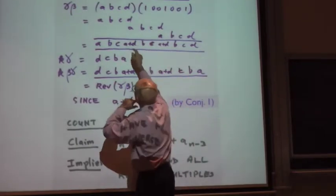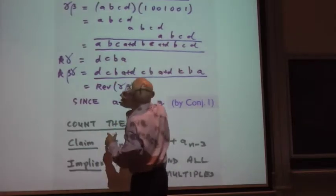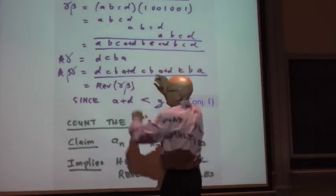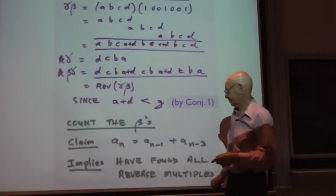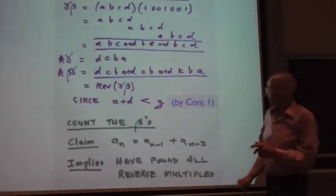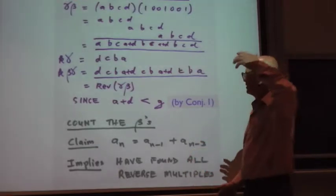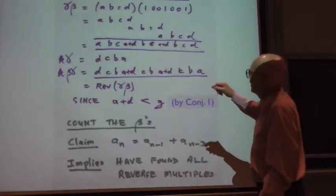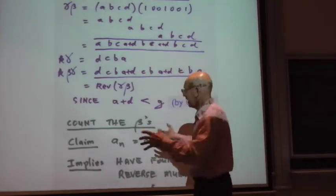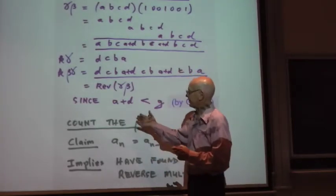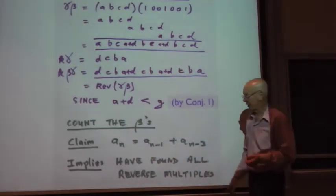If there had been carries, this would have propagated here, and it would have messed up. It would no longer be the reverse. So now we have a large collection of reverse multiples by this argument, assuming the conjecture is true.